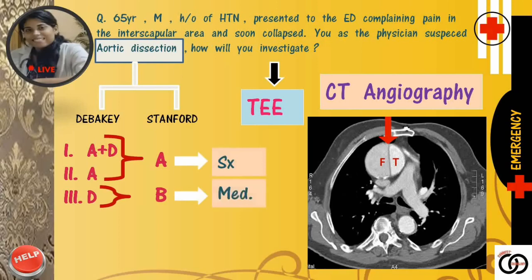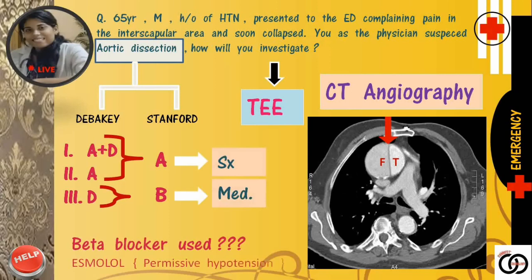One question here: which beta blocker can be utilized in cases of aortic dissection? Yes, that's Esmolol, which allows permissive hypertension.